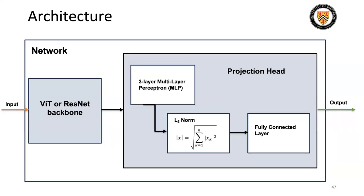The DINO architecture takes input images, feeds them into a vision transformer or ResNet backbone, then through a projection head — a three-layer multilayer perceptron — fed into an L2 norm (taking the square root of each component to get the distance, similar to Pythagoras), and then a fully connected layer to make predictions.